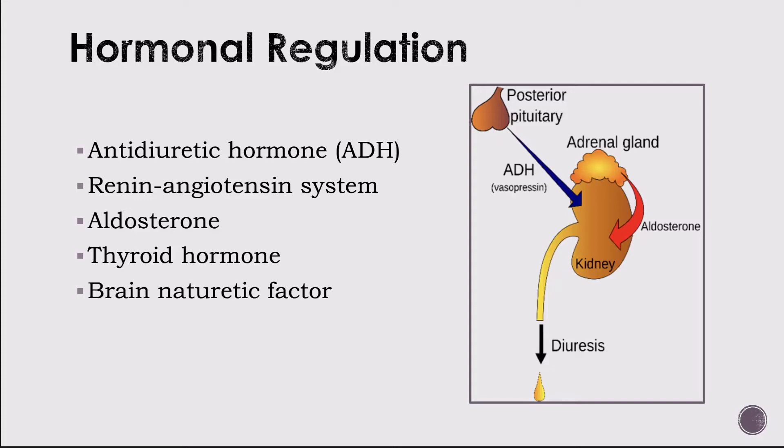Thyroid hormone affects fluid volume by influencing cardiac output. An increase in thyroid hormone causes increased cardiac output, therefore increasing glomerular filtration rate and subsequently increasing urine output. A decrease in thyroid hormone has the opposite effect. Brain natriuretic factor is a lab value monitored closely to track the level of congestive heart failure — you can read more about it in your book.